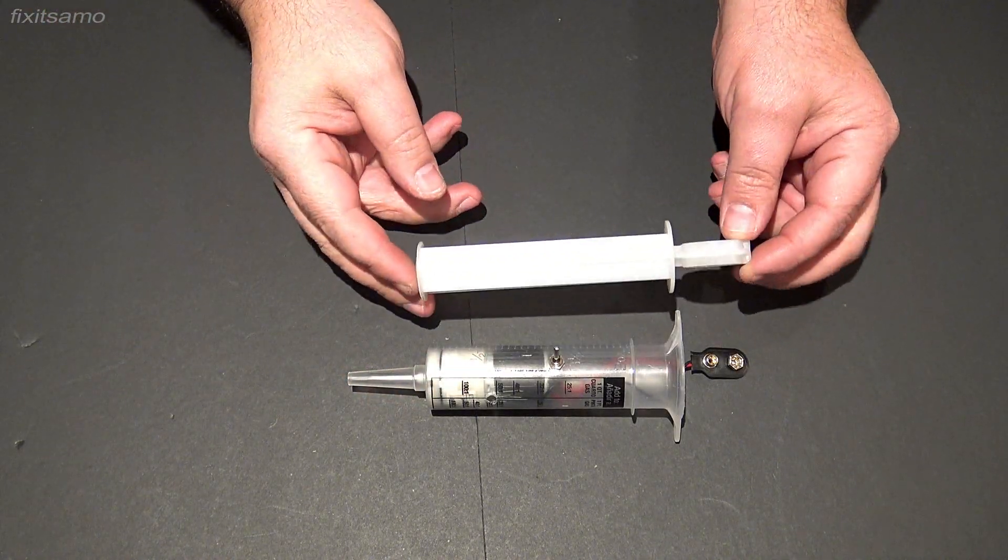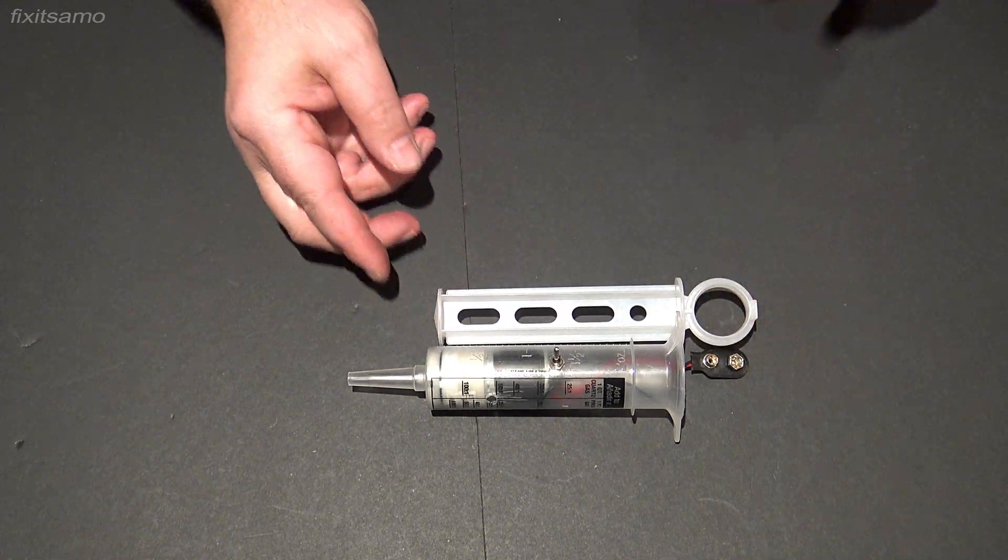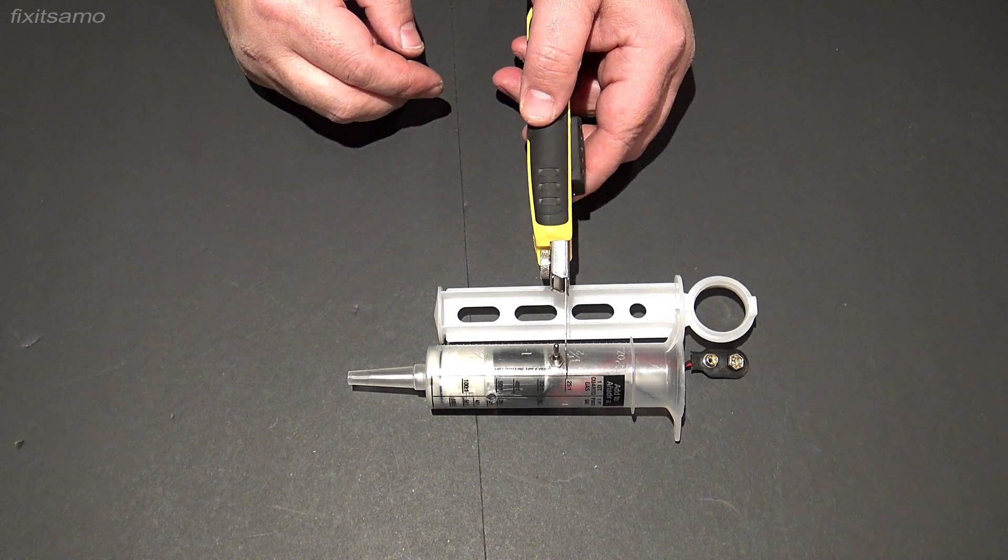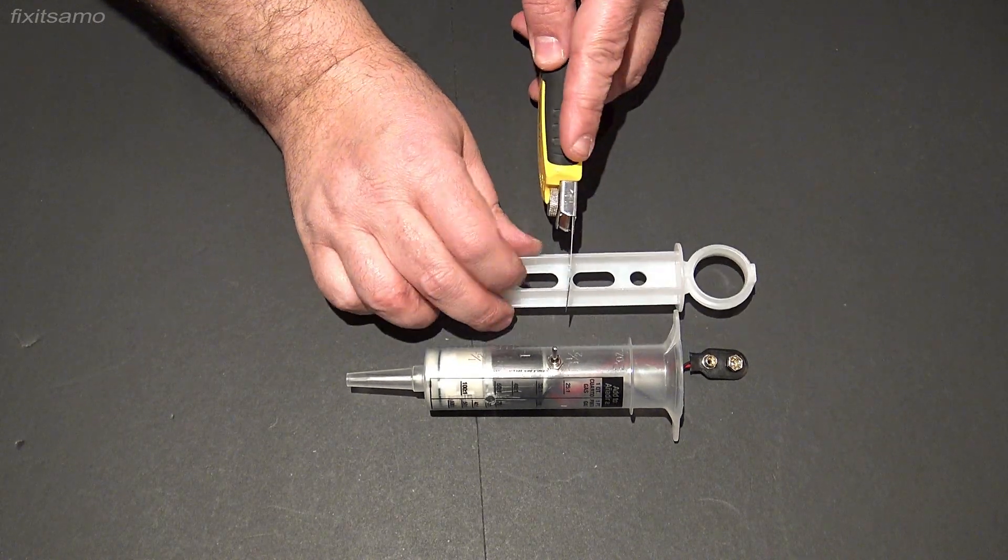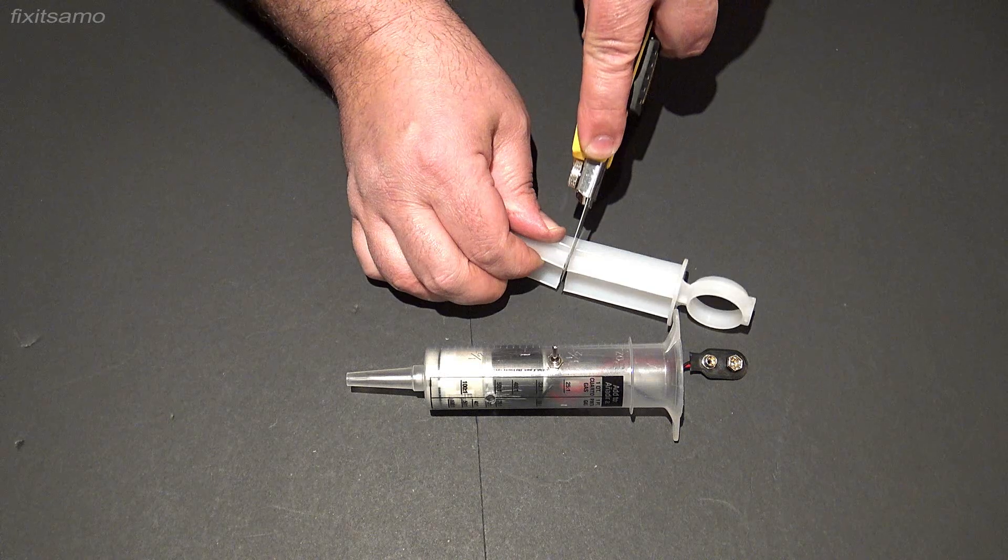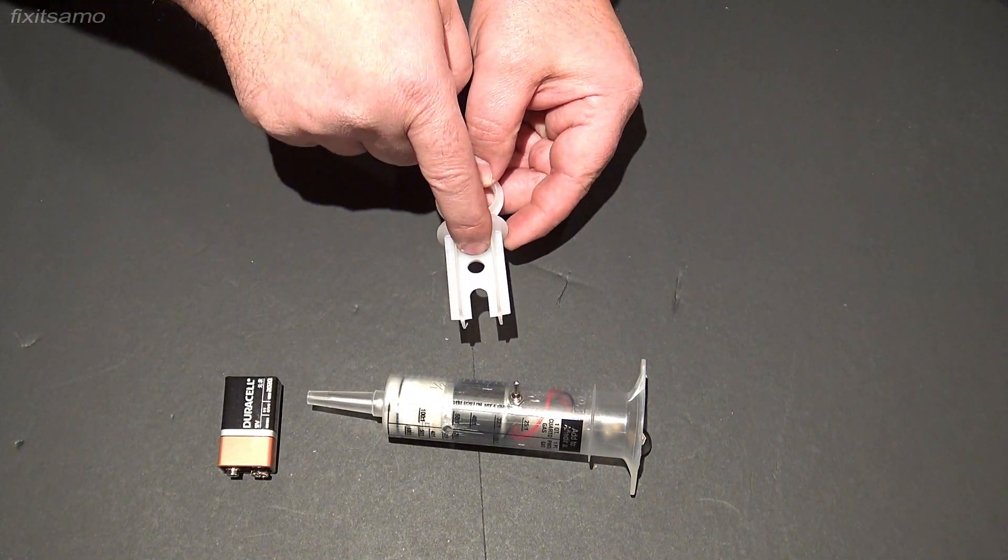And over here I got the cover so what I'm gonna do is I'm gonna put them next to each other and I'm gonna measure exactly where our on-off switch ends and then I'm gonna cut right here. And now we're gonna cut this part over here inside.